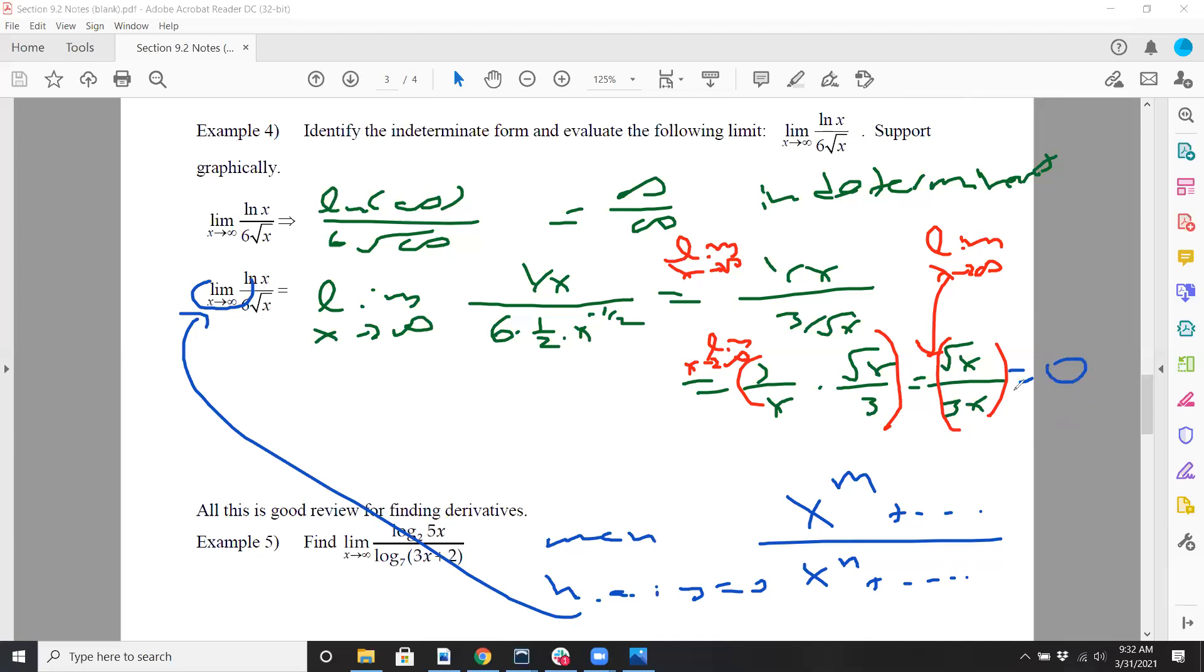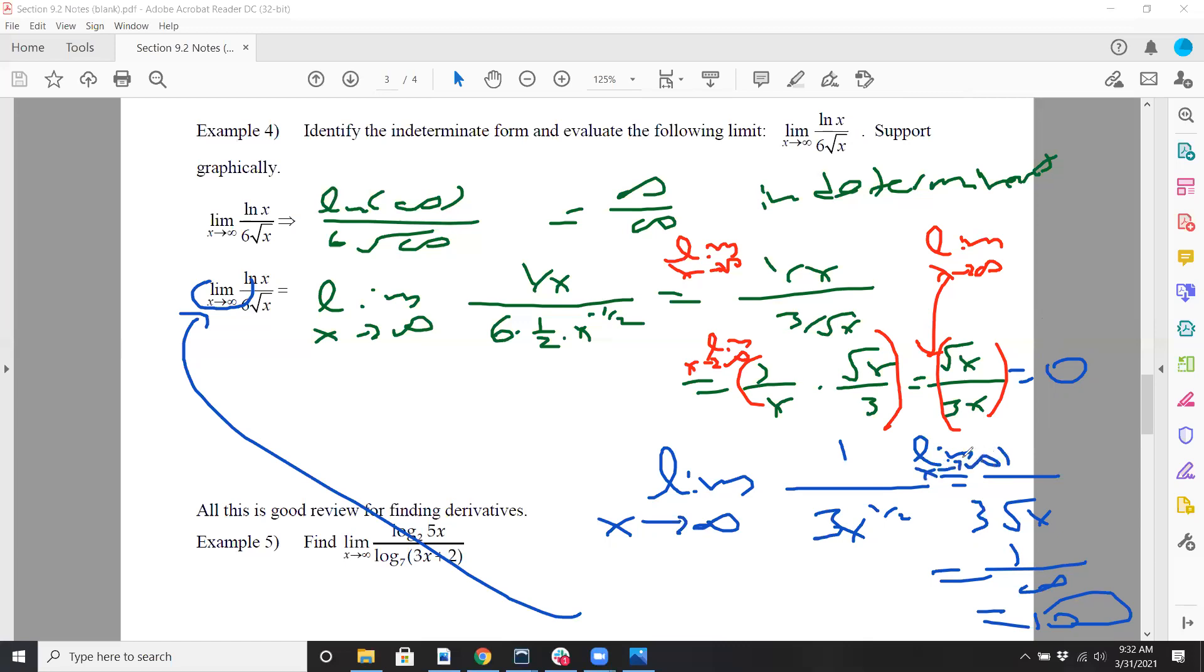Or if you so desire, you could simplify it. That's going to be 1 over 3x to the 1/2, or 1 over 3 root x. If you plug infinity to the bottom now, you have 1 over a big number, and that's essentially 0. So that's going to be 0.